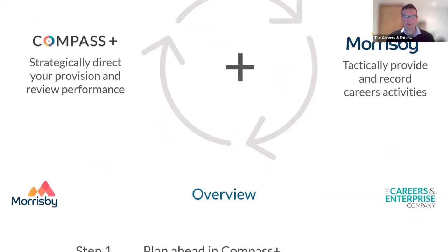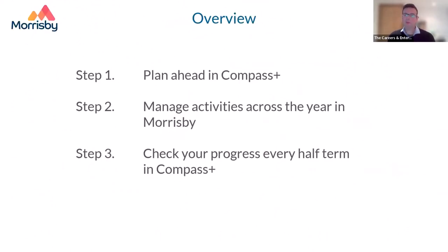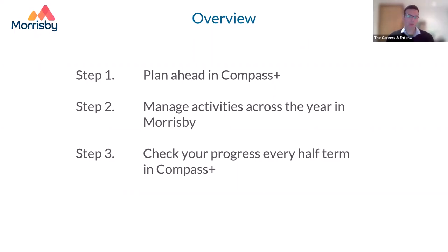We recommend following a three-step plan. Most of you should be taking Compass evaluations — ideally one at the start of the year, then one every term. At the start of the year, take your evaluation and drill down to see where you're meeting Gatsby benchmarks and where you have criteria to meet. Step two: once you've identified those gaps, use Morrisby tactically to manage activities. Step three: check your progress every half term in Compass Plus.